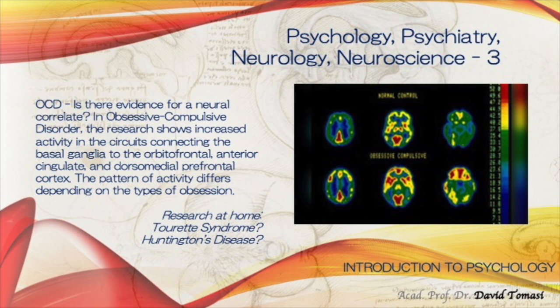Regarding OCD, the question is: is there evidence for a neural correlate? Observing something in the brain is not the same as saying the brain caused the issue. In OCD, research shows increased activity in circuits connecting the basal ganglia to the orbitofrontal, anterior cingulate, and dorsal medial frontal cortex, with the pattern differing depending on the types of obsession. I'd like you to also explore whether Tourette syndrome and Huntington's disease could be viewed as an intersection between psychology and neurology.